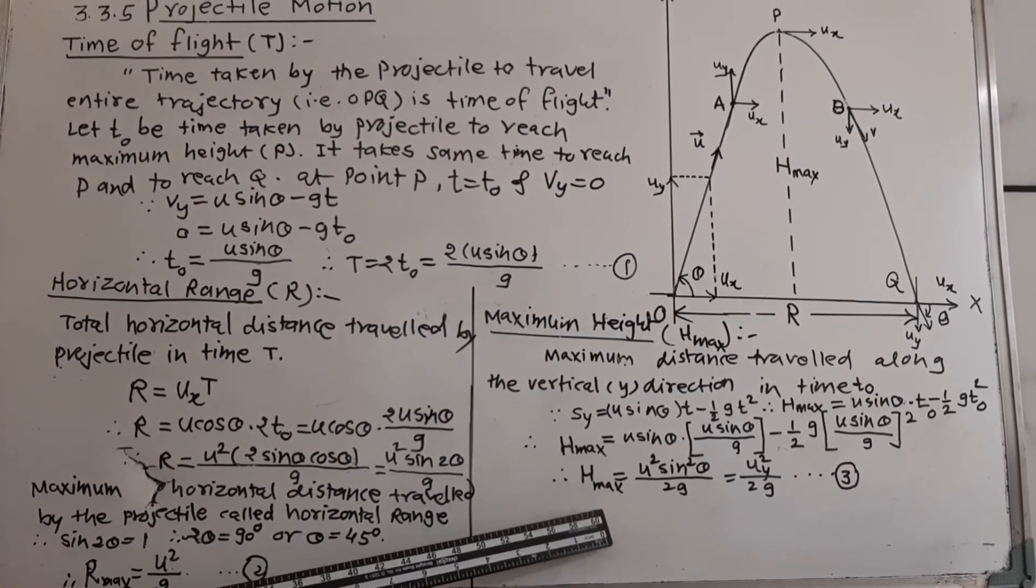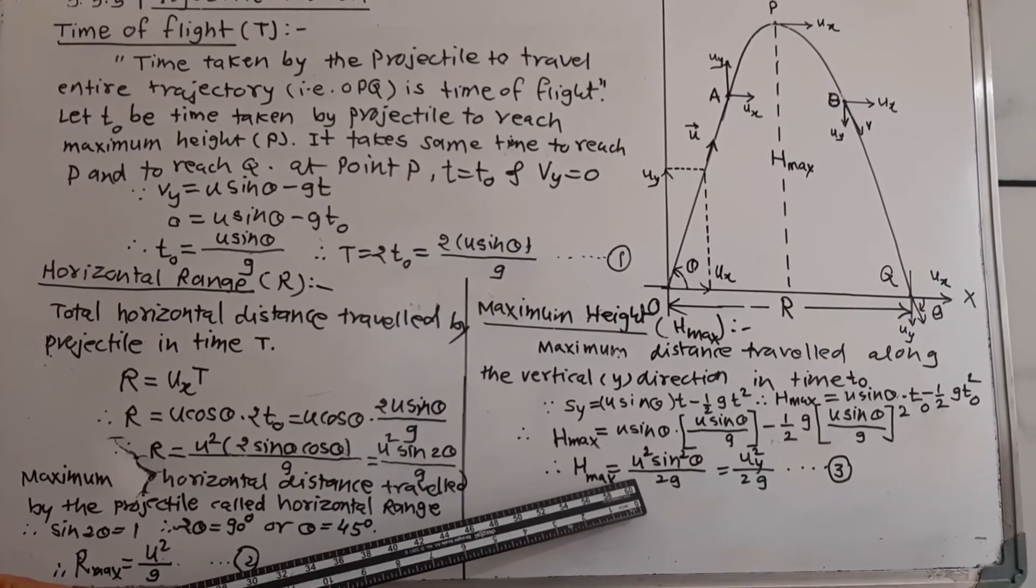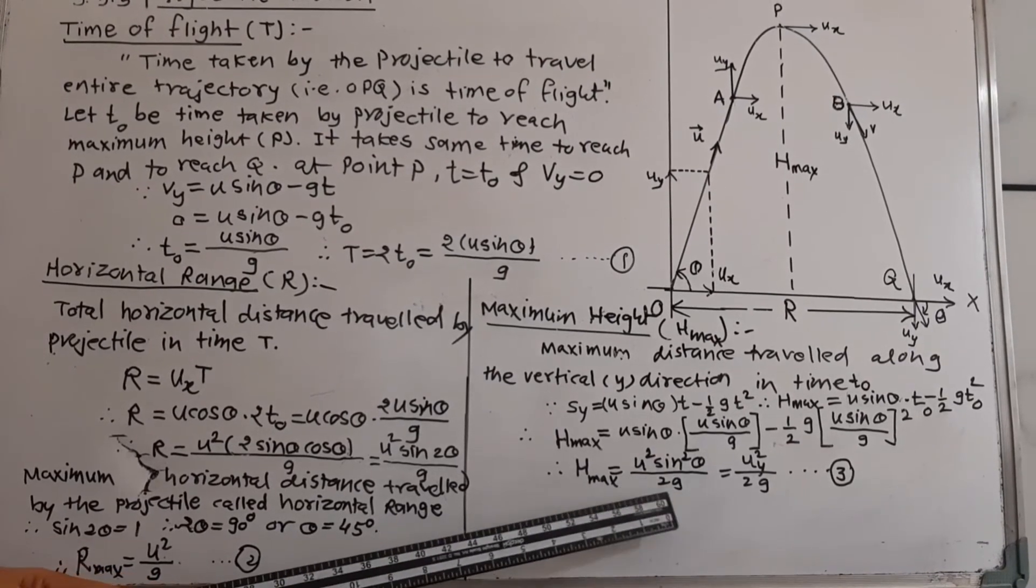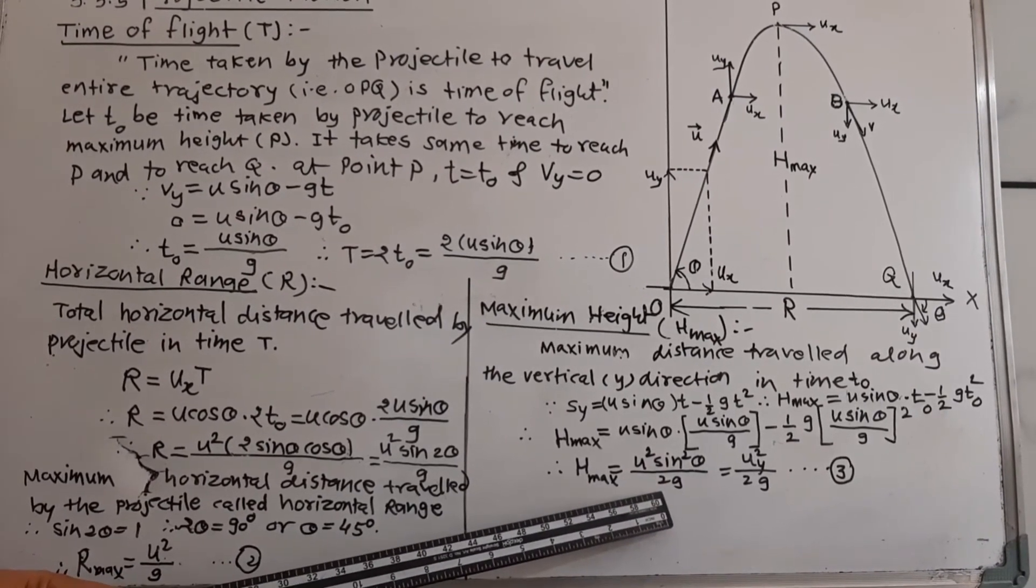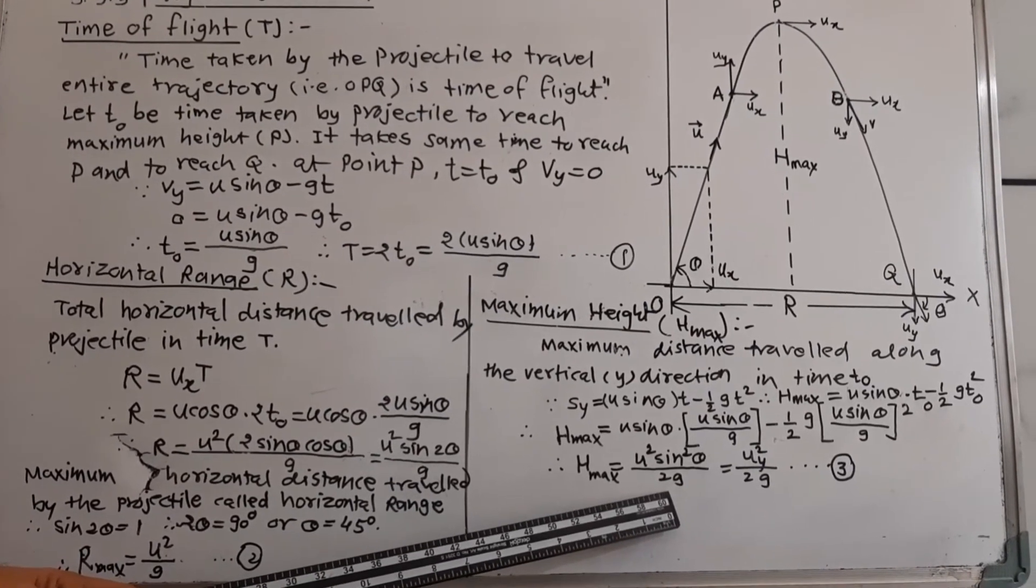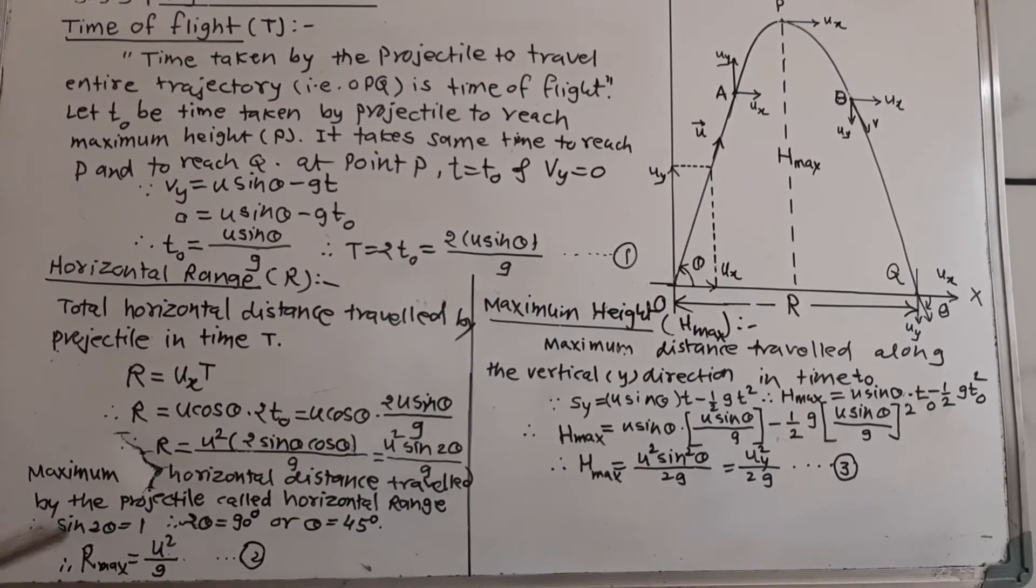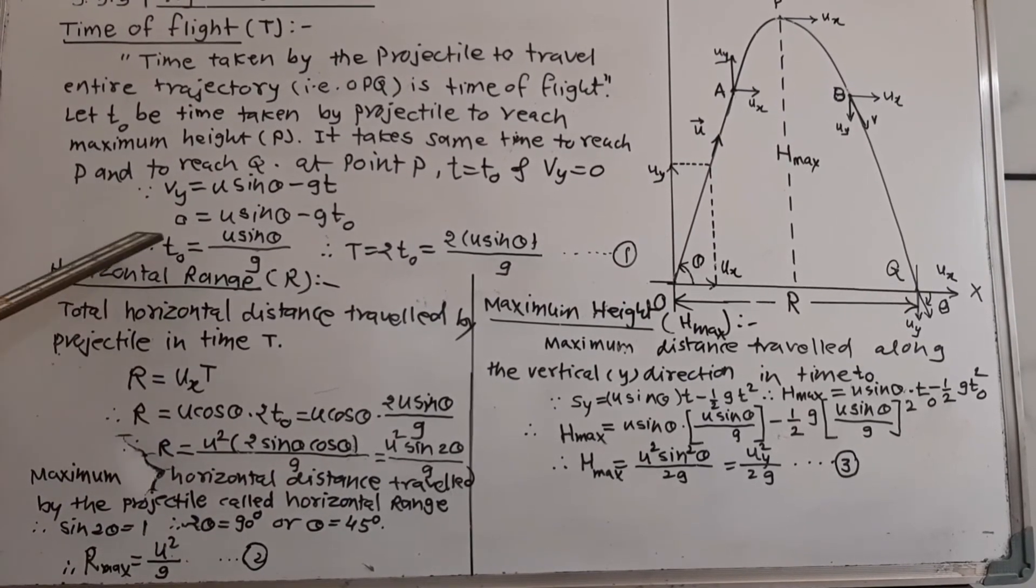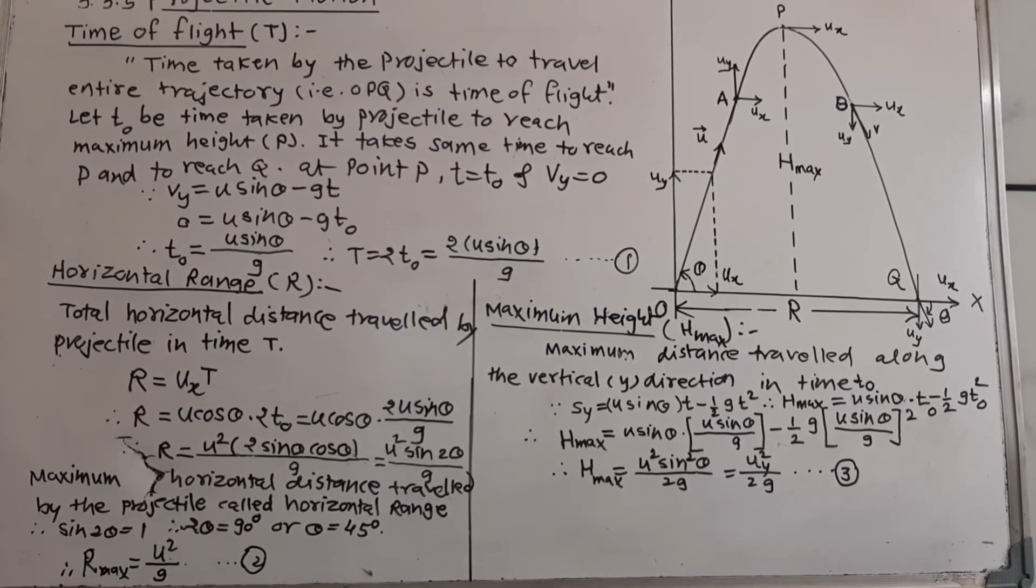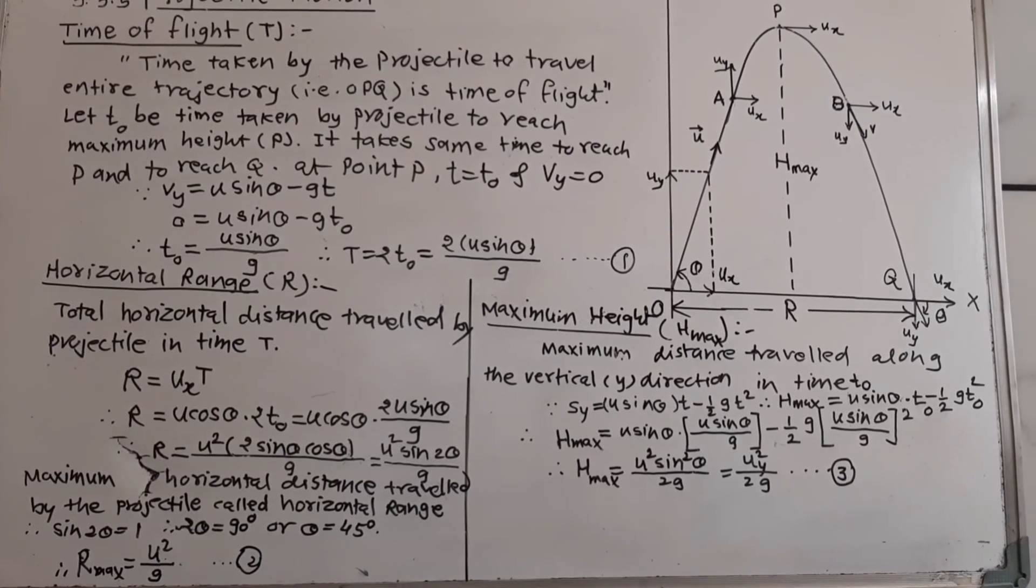And from this equation H max, the maximum height depends upon initial velocity of the projectile, angle of projection, and acceleration due to gravity. Out of that, G is constant generally. Only U and theta are variable. So, the maximum height, range or the maximum range, as well as the time of flight, all depends upon initial velocity and the angle of projection.